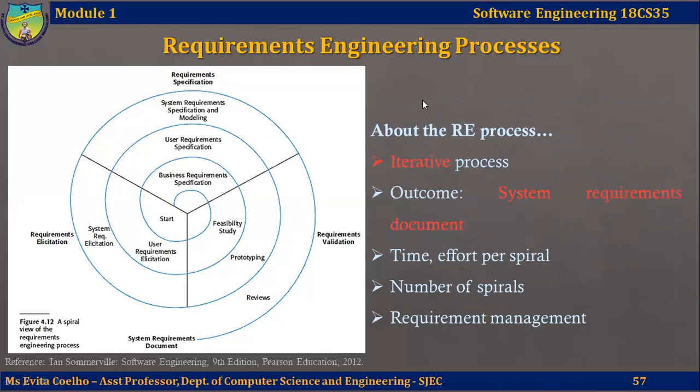The amount of time and effort devoted to each activity in each iteration depends on the stage of the overall process and the type of software system being developed. Early in the process — in the innermost spirals — more effort will be spent on understanding high-level business non-functional requirements and user requirements. Later in the process, in the outer rings of the spiral, more effort will be devoted to eliciting and understanding detailed system requirements. The number of iterations around the spiral can vary, and the spiral can be exited after some or all of the user requirements have been elicited. If using agile development, it can be used instead of prototyping so that requirements and system implementation are developed side by side.